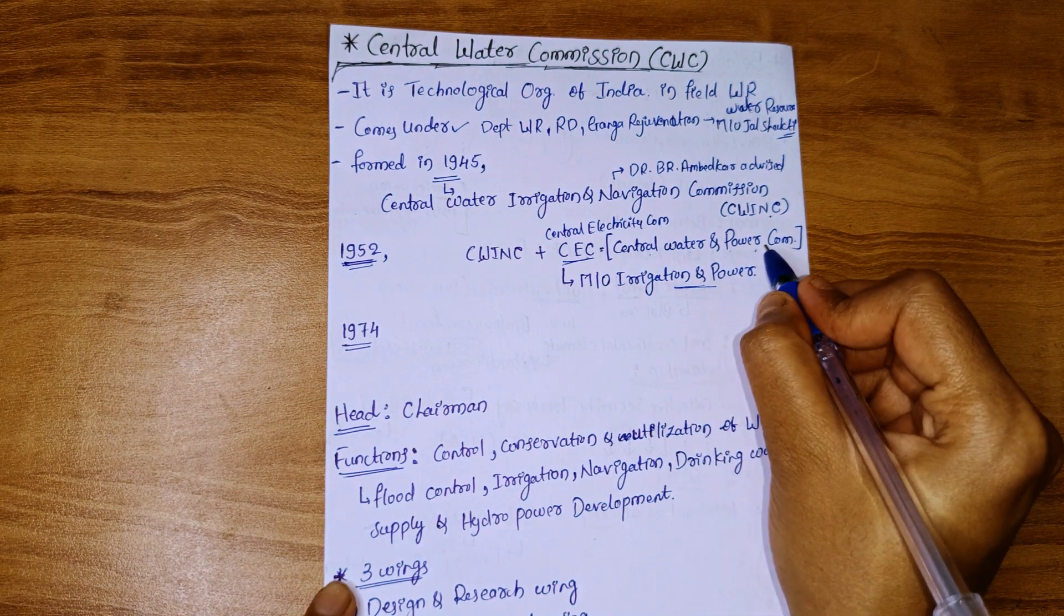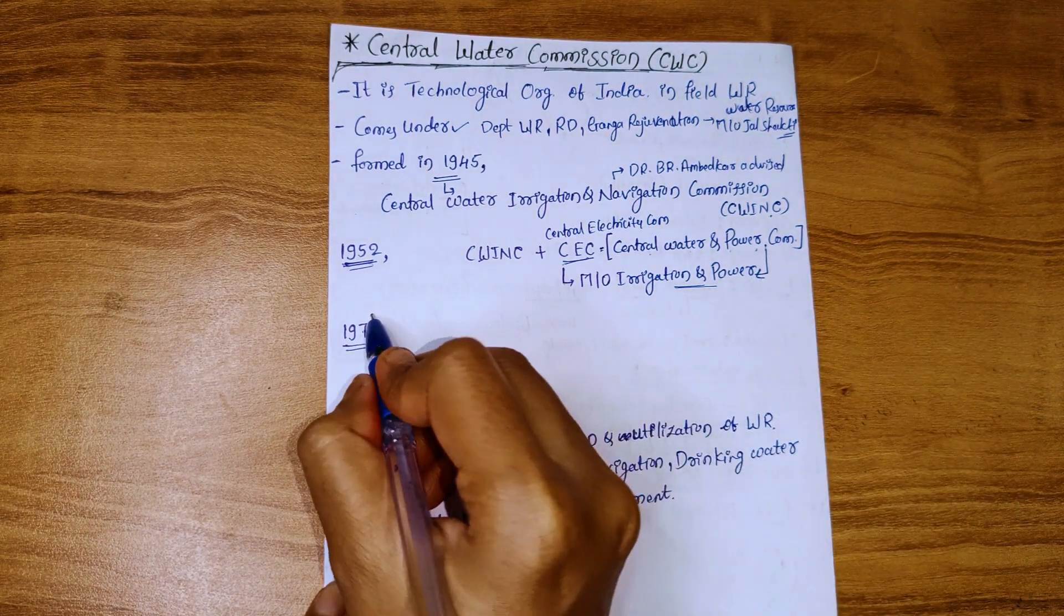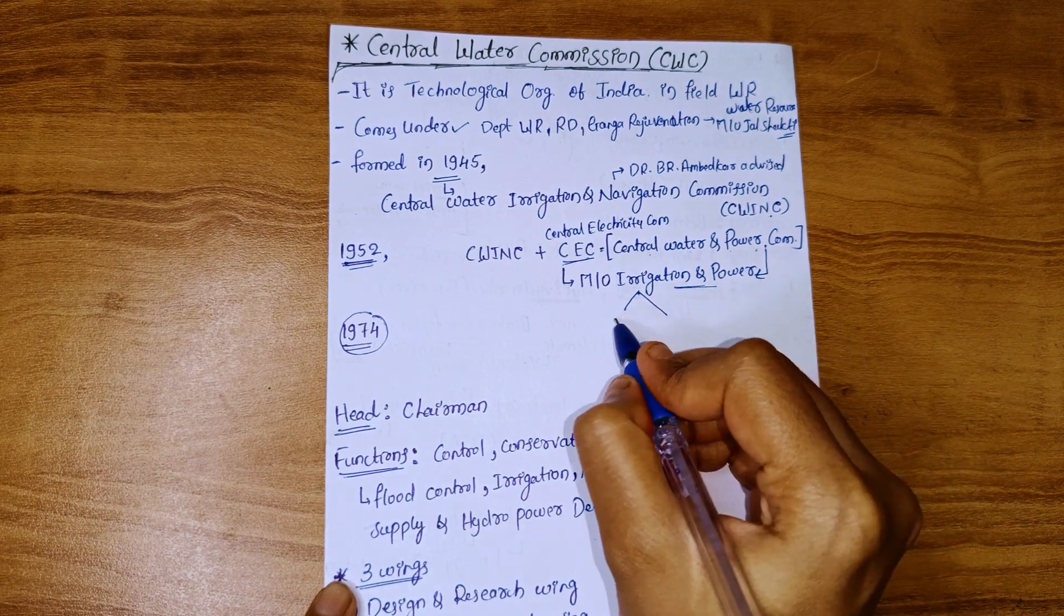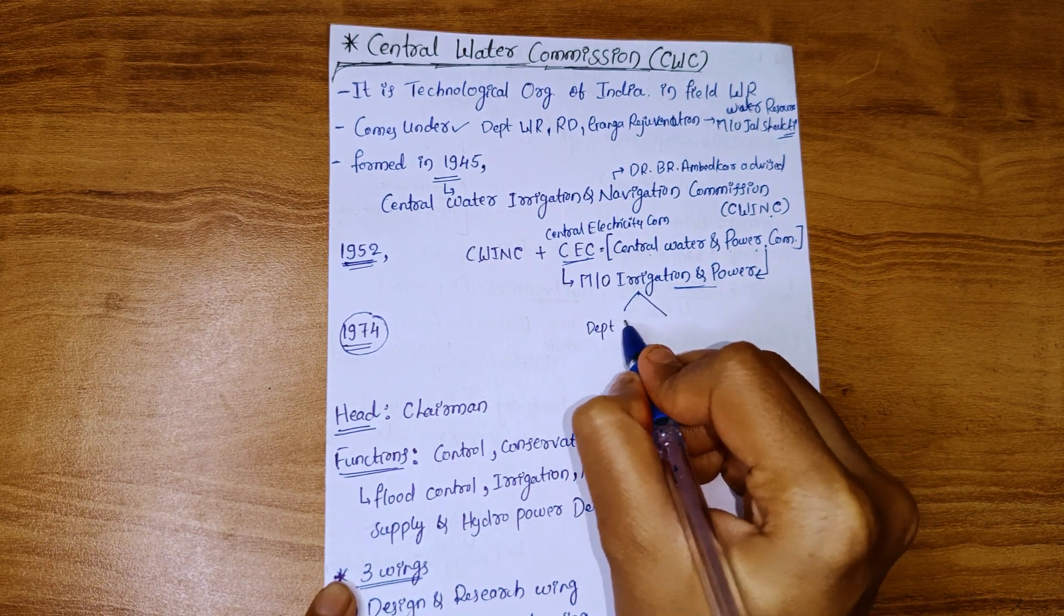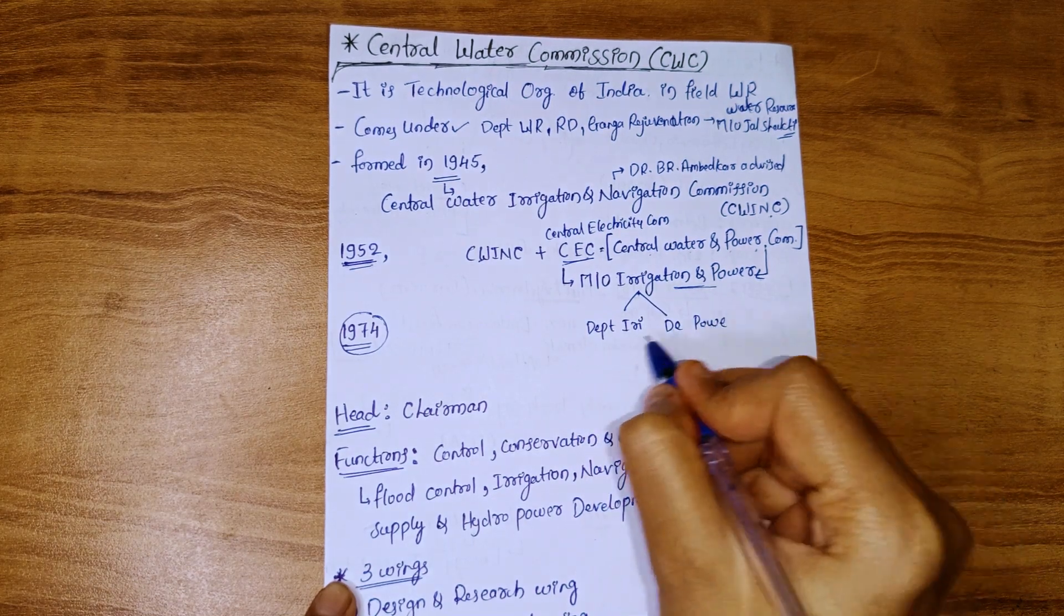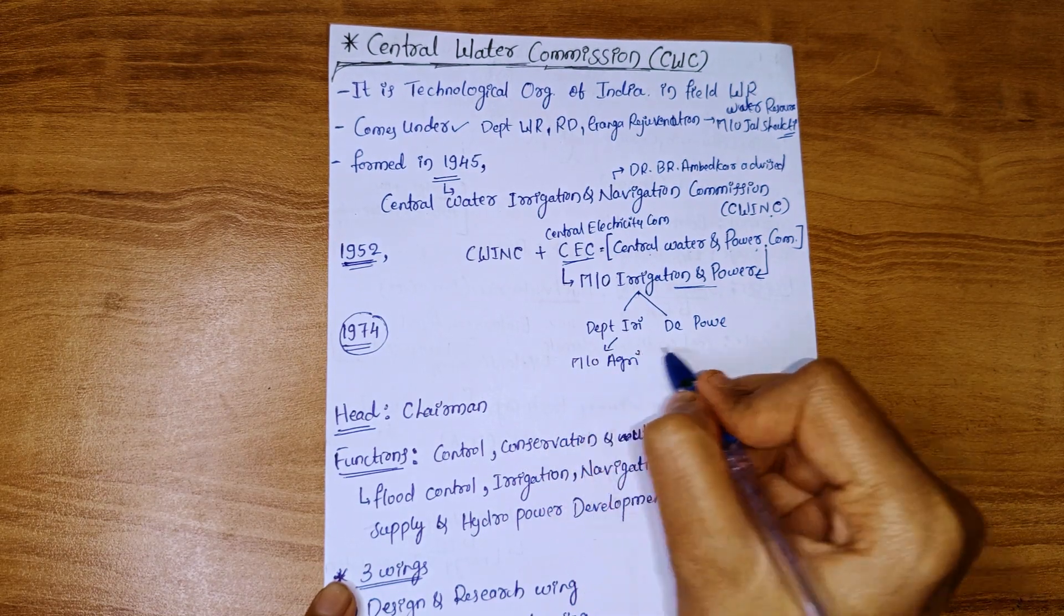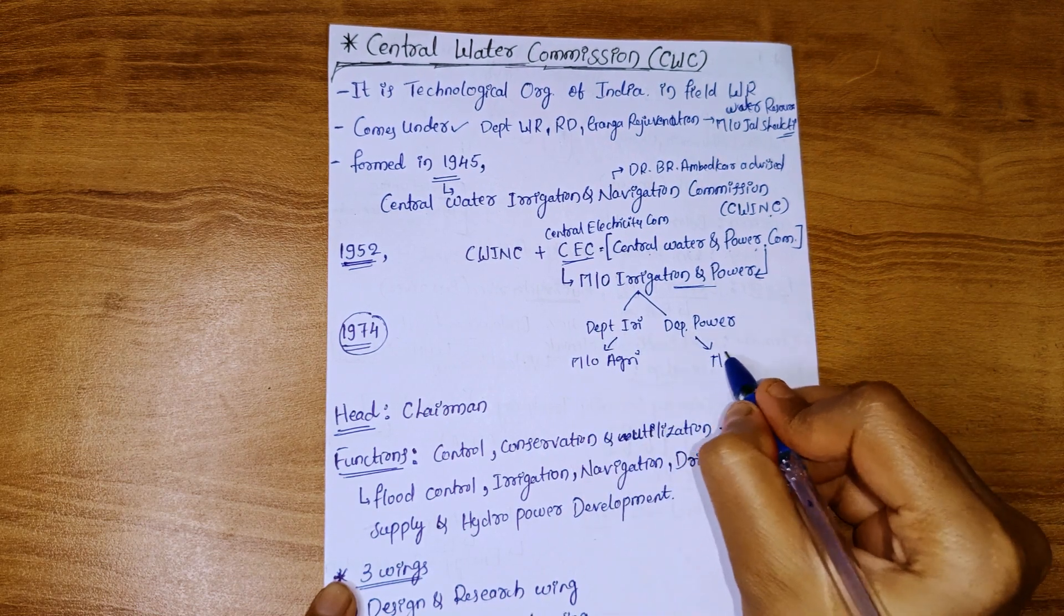This Central Water and Power Commission was kept under the Ministry of Irrigation and Power. In 1974, the ministry separated into the Department of Irrigation and Department of Power. Irrigation was placed under the Ministry of Agriculture, and Power under the Ministry of Energy.